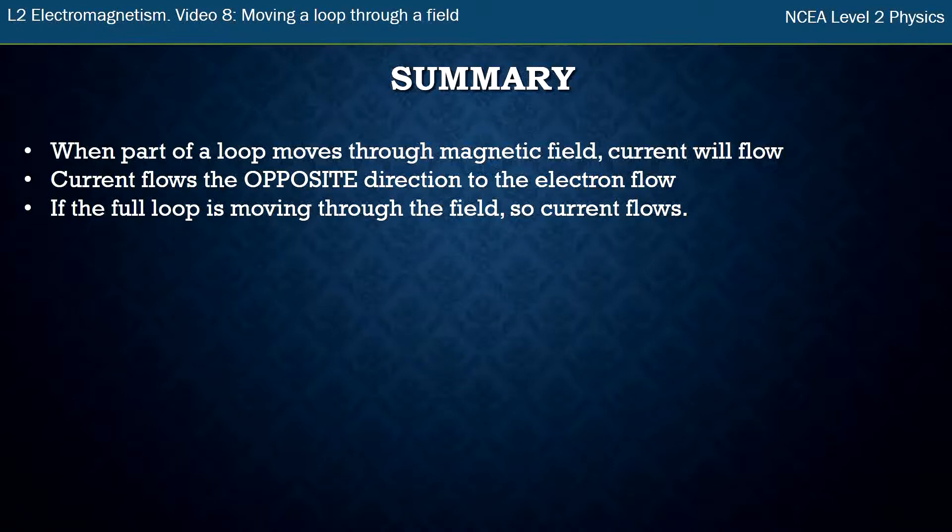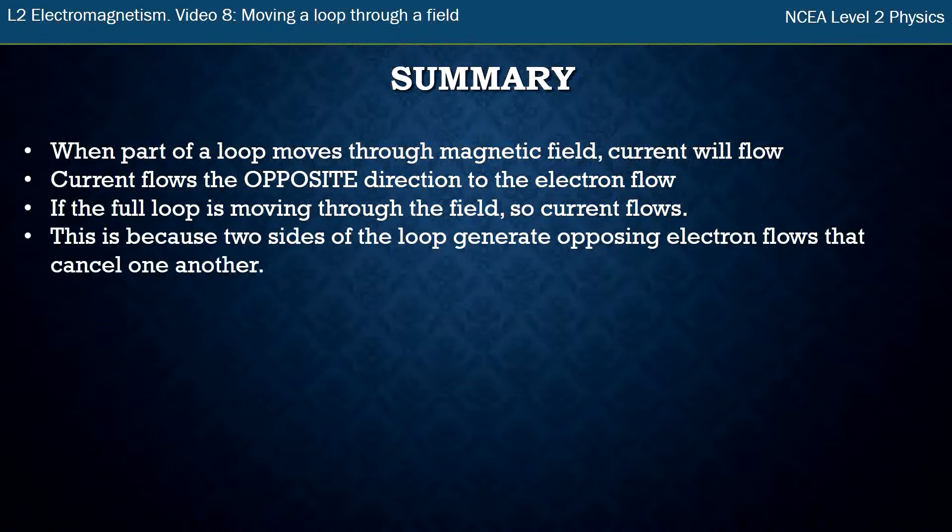But if a full loop is moving through a field, no current flows. And the reason why no current flows is because the two sides of the loop generate opposing electron flows and they cancel one another out.